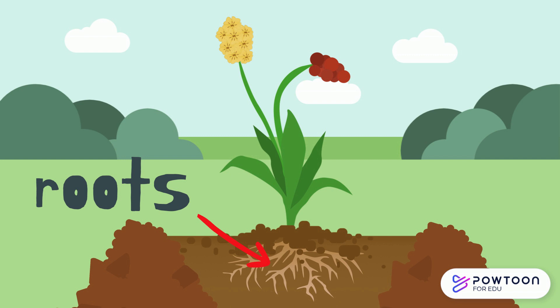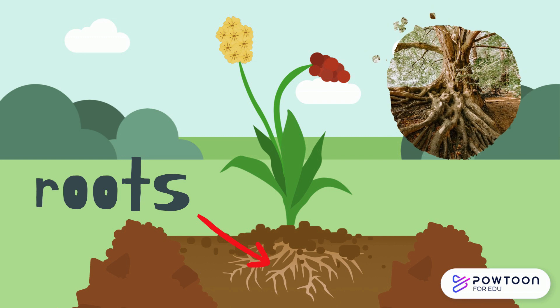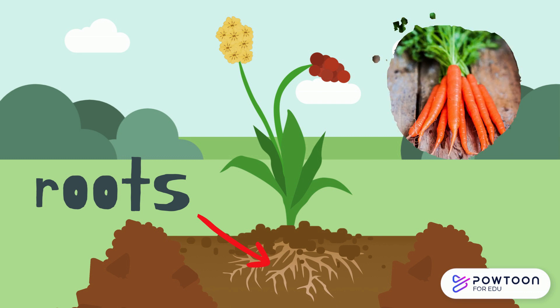Roots. The roots are very important because they help the plant hold onto the ground and stand in one spot. They absorb water and nutrients from the soil and send it up to the rest of the plant through the stem. You may have seen tree roots coming up from the ground before. Some vegetables we eat are actually roots, like carrots.